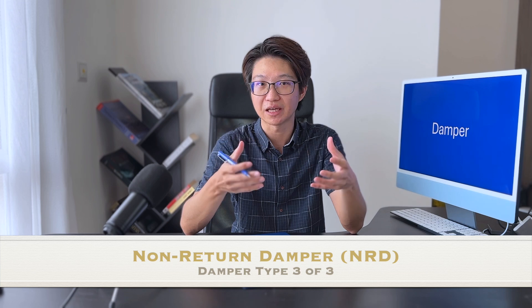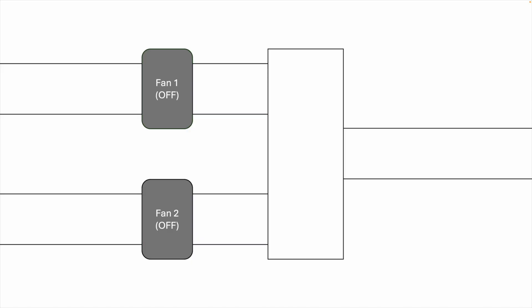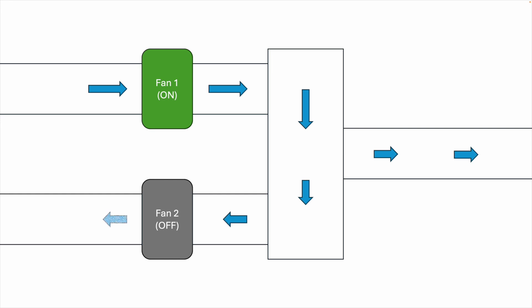The third type of damper is known as the non-return damper, or some people call it the backdraft damper — NRD. As the name suggests, non-return means we want the airflow to flow in one direction and prevent it from flowing backwards. A very typical example is when you have two fans and both fans are connected to one duct. These two fans serve as duty standby or a sequential shift. When you run fan number one, fan number two won't run. After 12 hours you switch over to the other fan. In this kind of system, both fans need an NRD — because when you run one fan, it will blow through both sides: to the main duct and also in reverse direction back through fan number two.